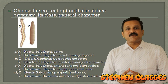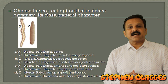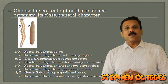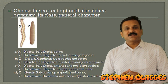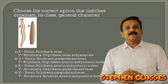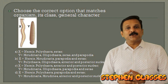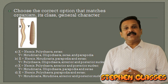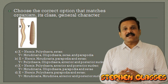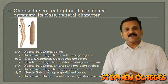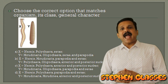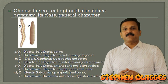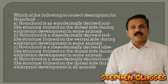Coming back to the question, we have Nereis and Hirudinea (leech) as the two examples. Nereis belongs to the Polychaeta group — they have parapodia and setae. Hirudinea, the leech, belongs to the Hirudinea group, where you can see anterior and posterior suckers. The correct answer is option D.